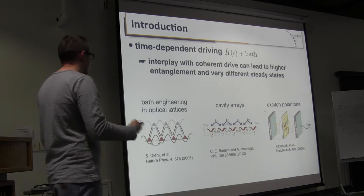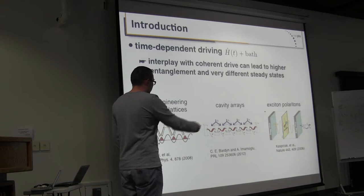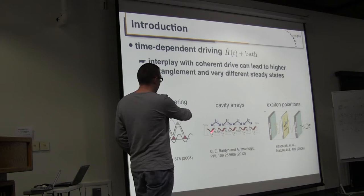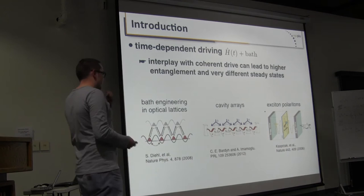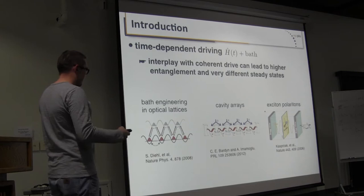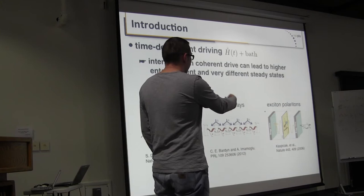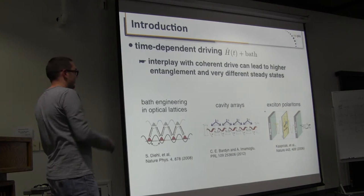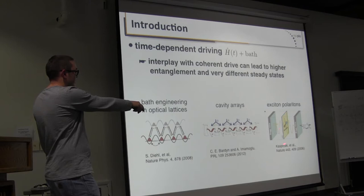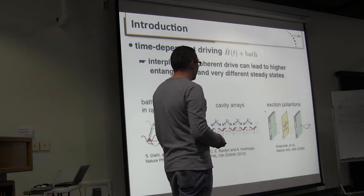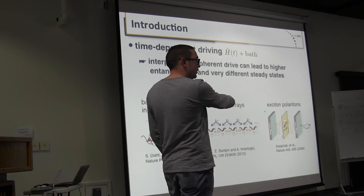More recently, cavity arrays are a very natural realization - with cavity loss and atomic decay giving incoherent processes, interactions via photon blockade, and so on. On the more natural side, without quantum engineering, exciton-polaritons - mixtures of light and electronic excitations in semiconductor quantum wells - have been discussed for a long time. There is a long-running discussion about whether you can form Bose-Einstein condensates of these polariton quasiparticles.